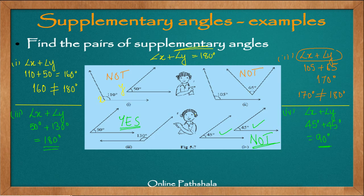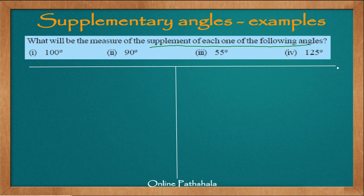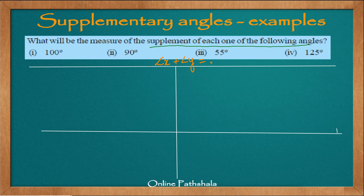Now let us look at another example. Here we are told to find the measure of the supplement of each of the following angles. We are given four angles and need to find their supplements. To reiterate: the criterion for two angles being supplementary is angle X plus angle Y equals 180 degrees, and we will use this to solve the problems.